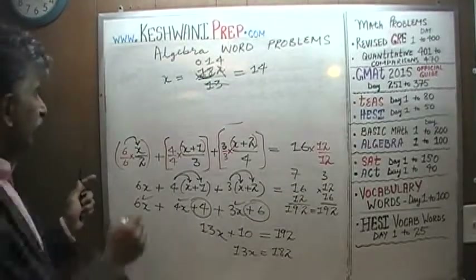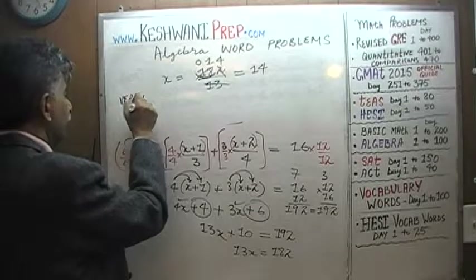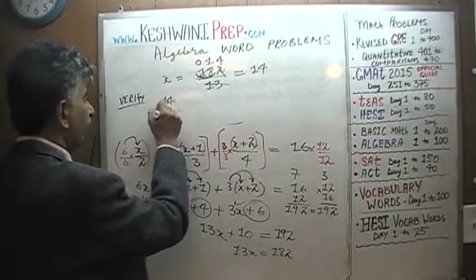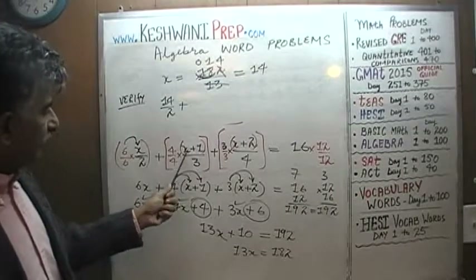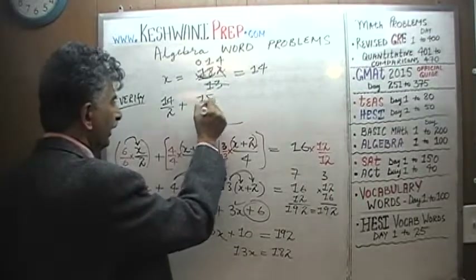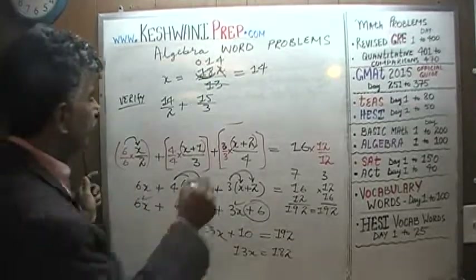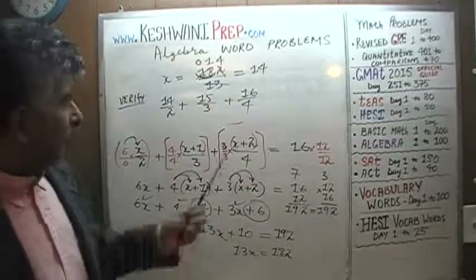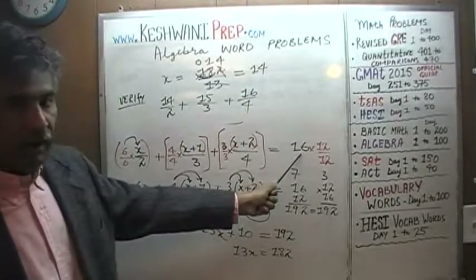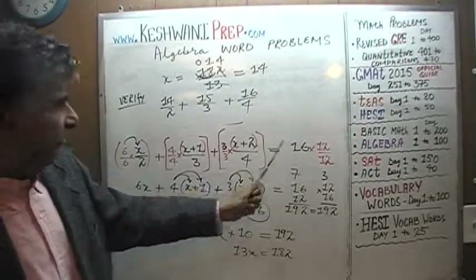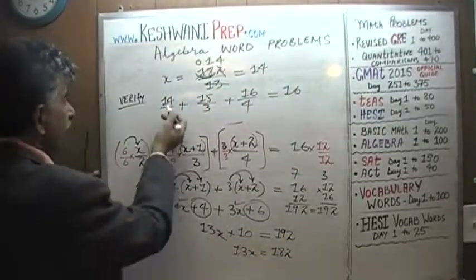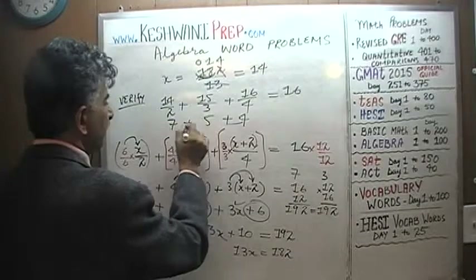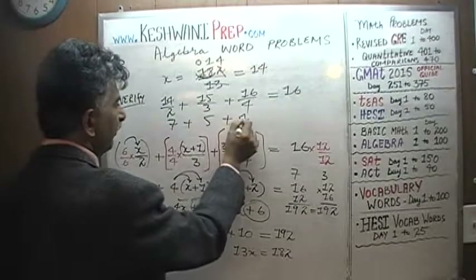All we have to do now is verify our work. If you take half of the first number — fourteen — plus a third of the next one, which is fifteen, plus a fourth of the largest one, which is sixteen, these three quantities should add up to sixteen. Fourteen divided by two is seven, fifteen divided by three is five, and sixteen divided by four is four. Seven plus five is twelve, twelve plus four is sixteen. What do you know — it's correct!